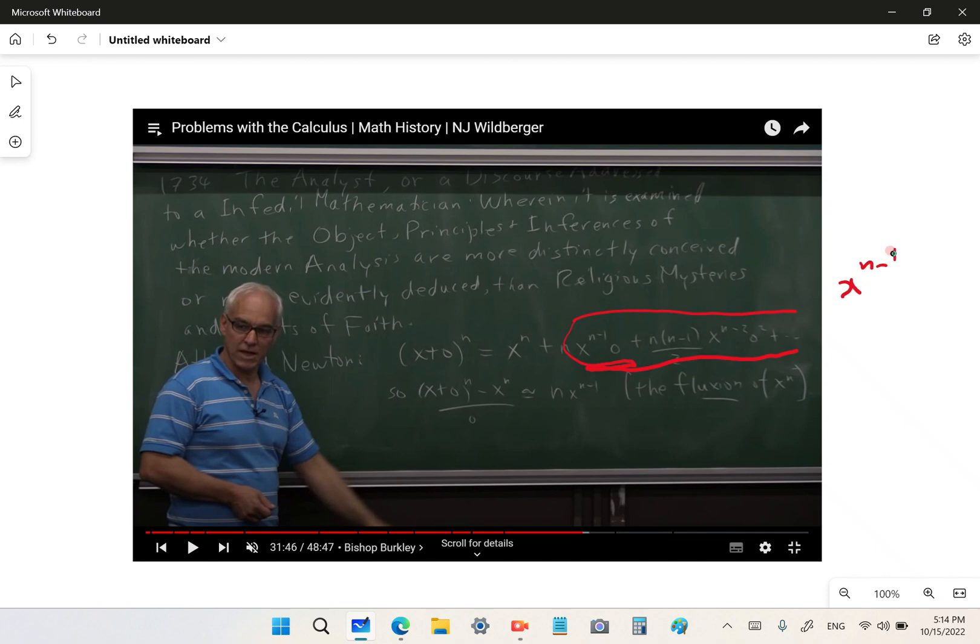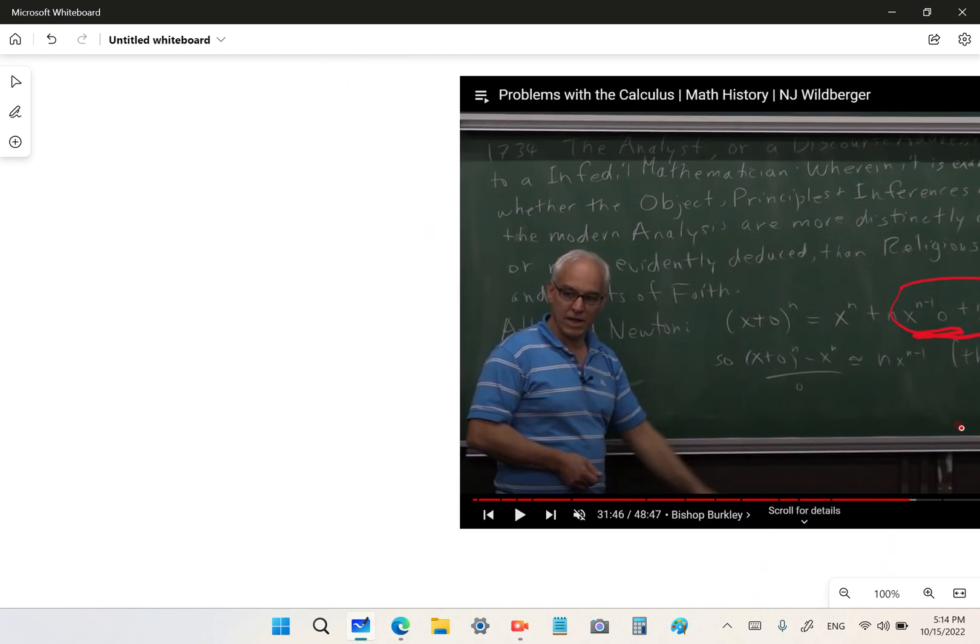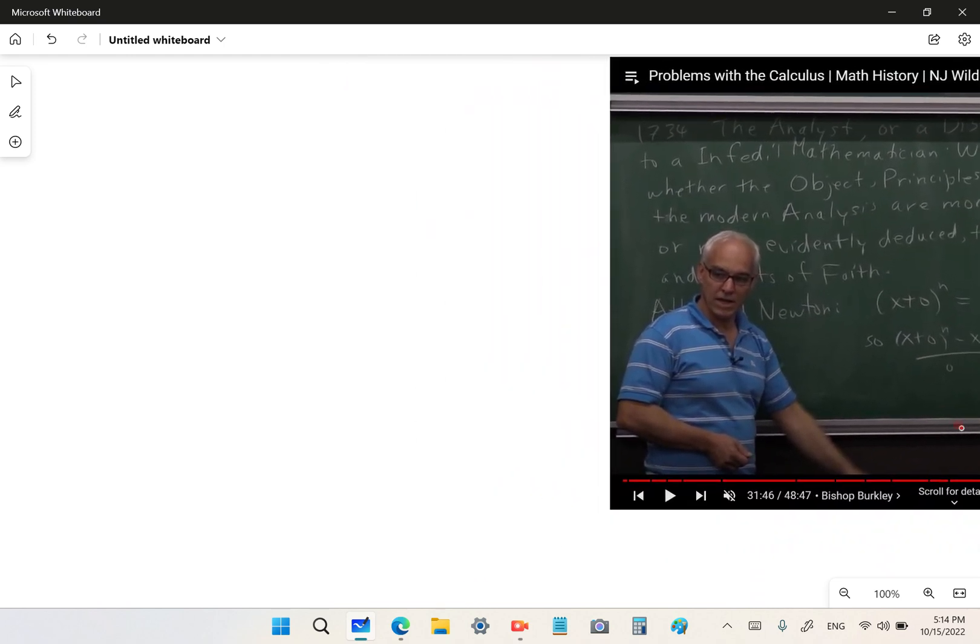So things like x to the n minus 1 times o plus n times n minus 1 over 2 times x to the n minus 2 times o squared, etc. So all the terms that you see in o actually disappear.